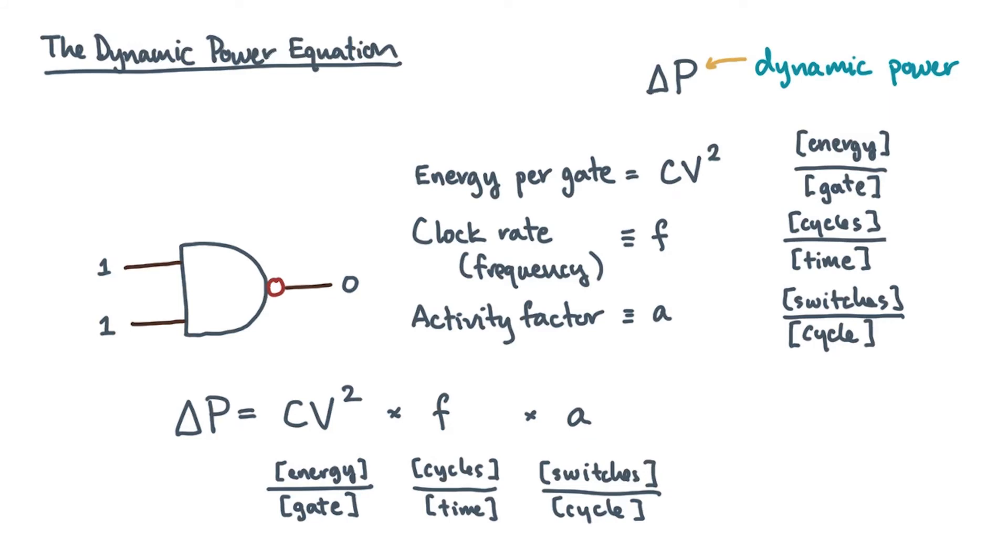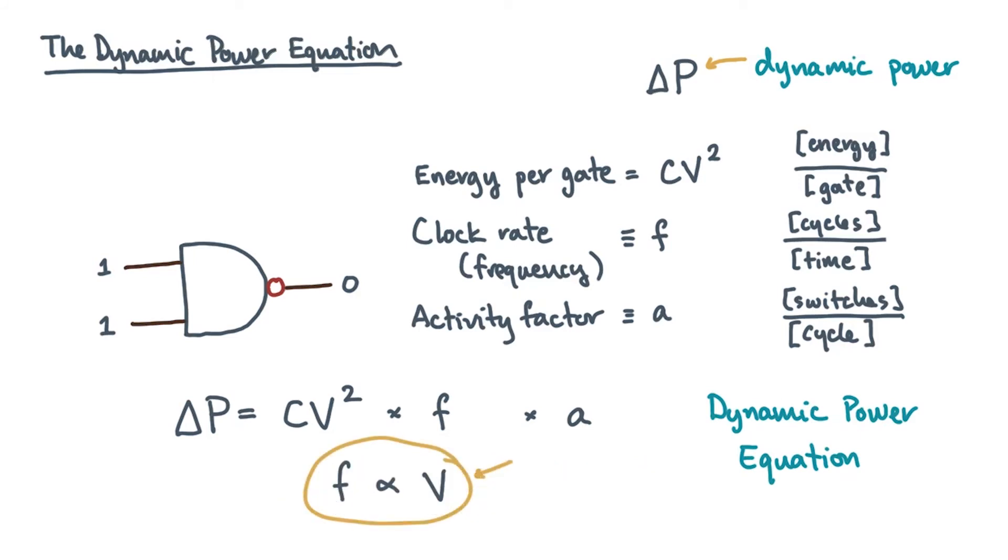This formula is sometimes called the dynamic power equation. Before moving on, let me give you one more quick fact about it. The clock rate F and the supply voltage V usually need to be kept in proportion to one another. That is, suppose you cut F in half, then you also need to cut V in half. Increases are the same. Suppose you increase F by 2, then you also need to double V. So why do F and V need to change together? The short story is that it has to do with maintaining the stability and reliability of the circuit. In particular, it's reliability in the presence of environmental noise.